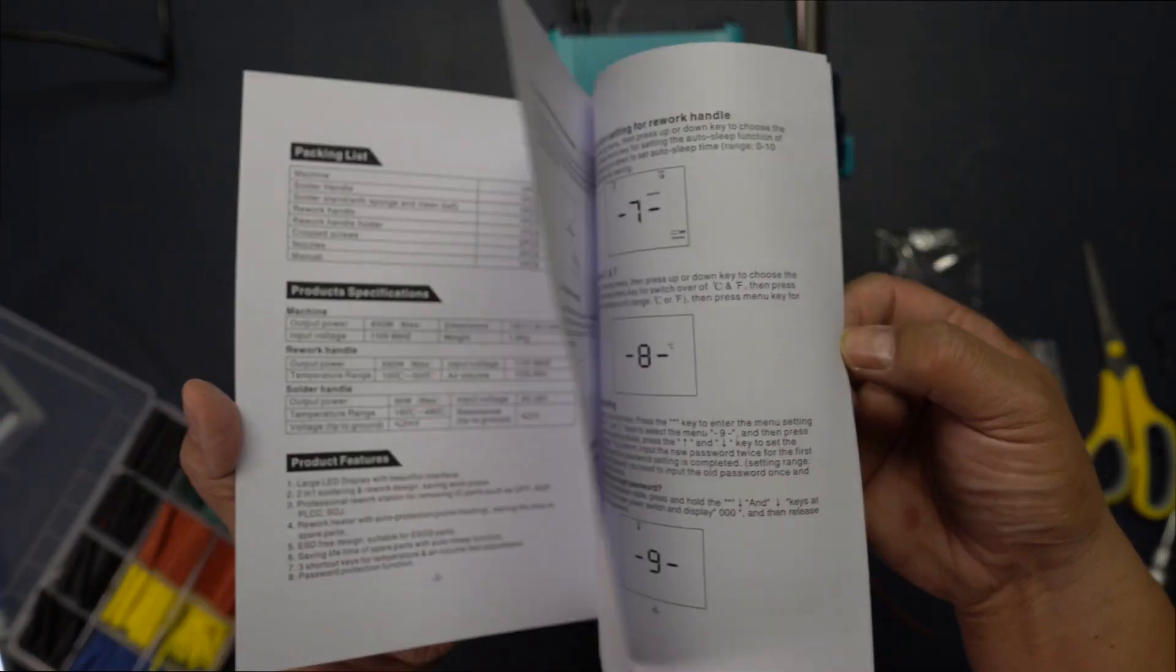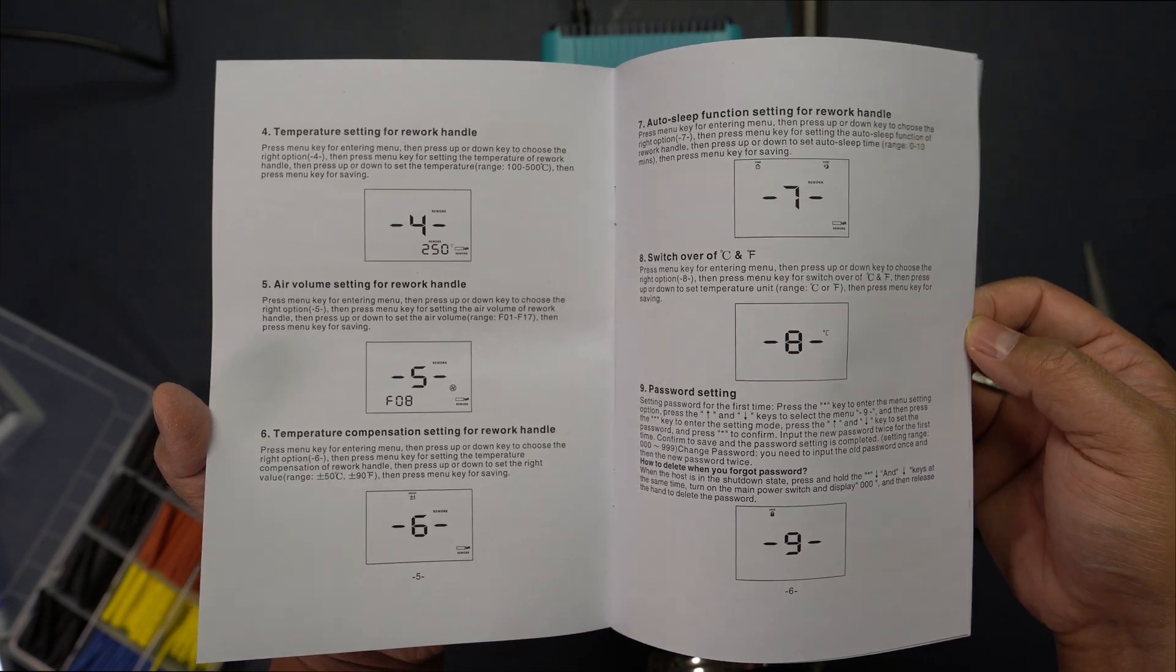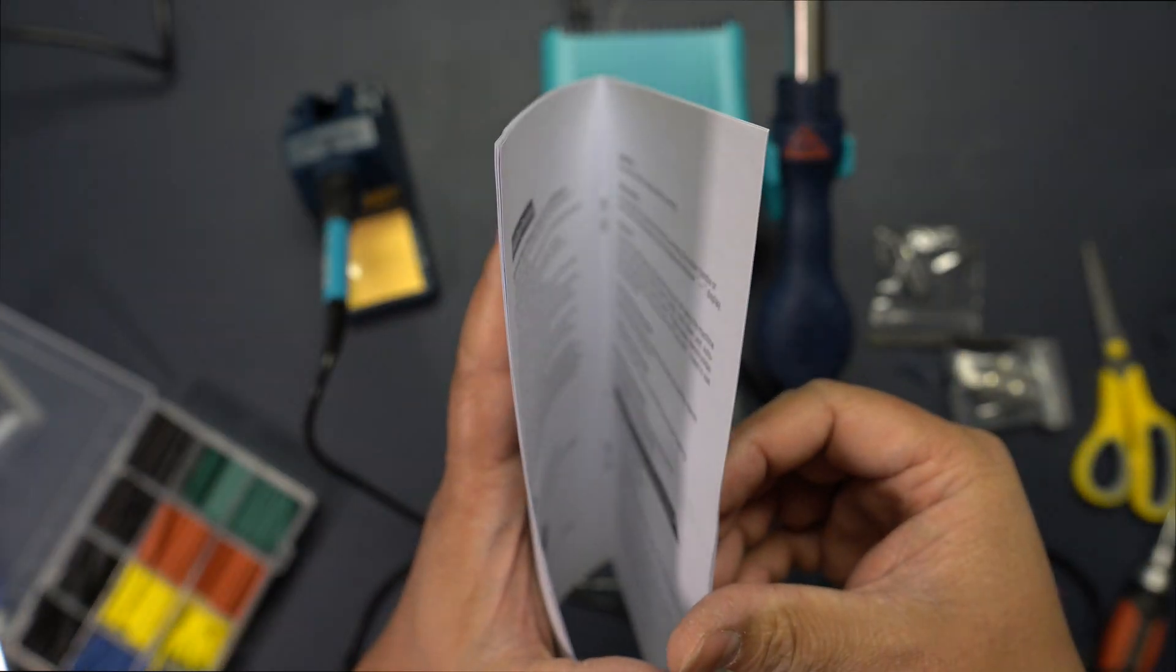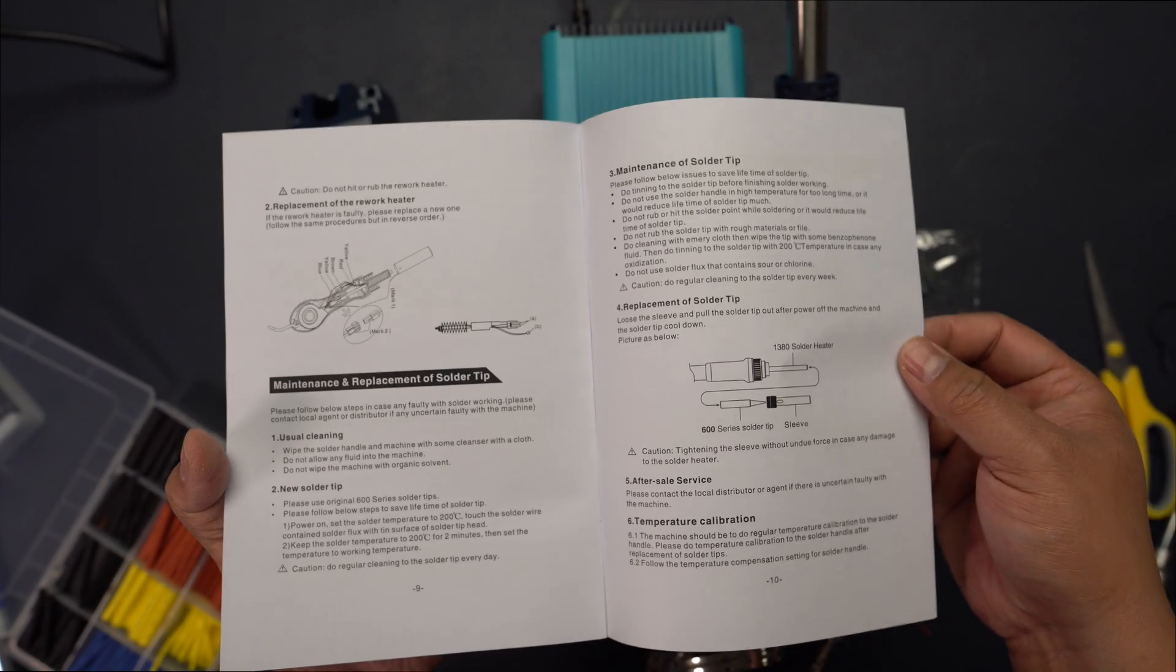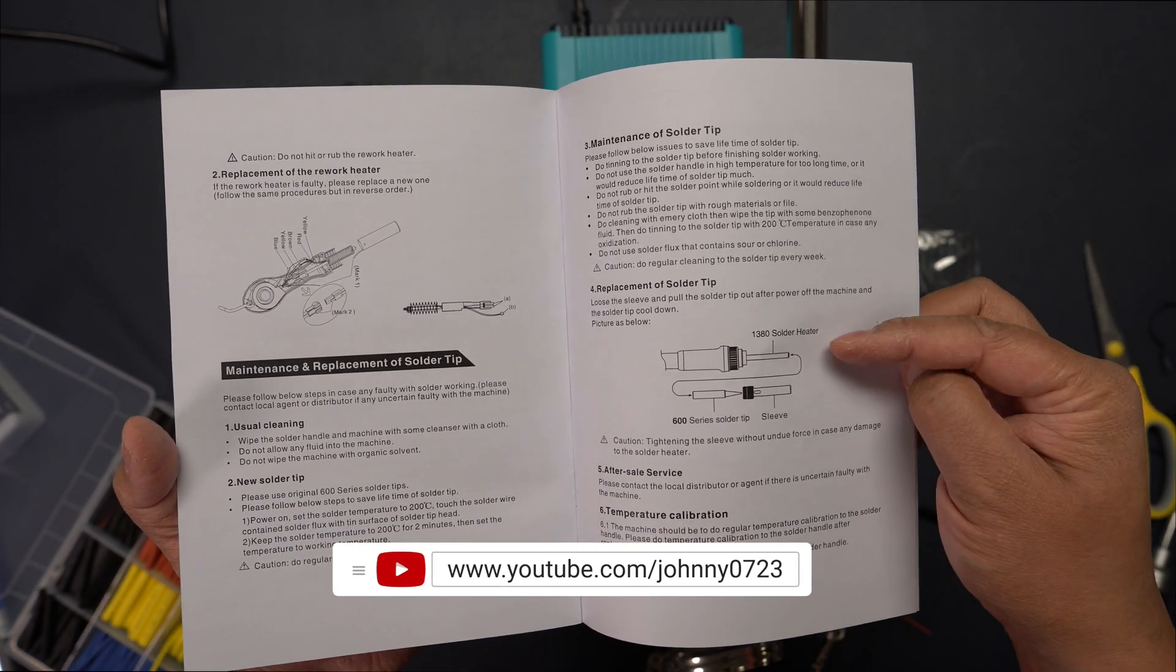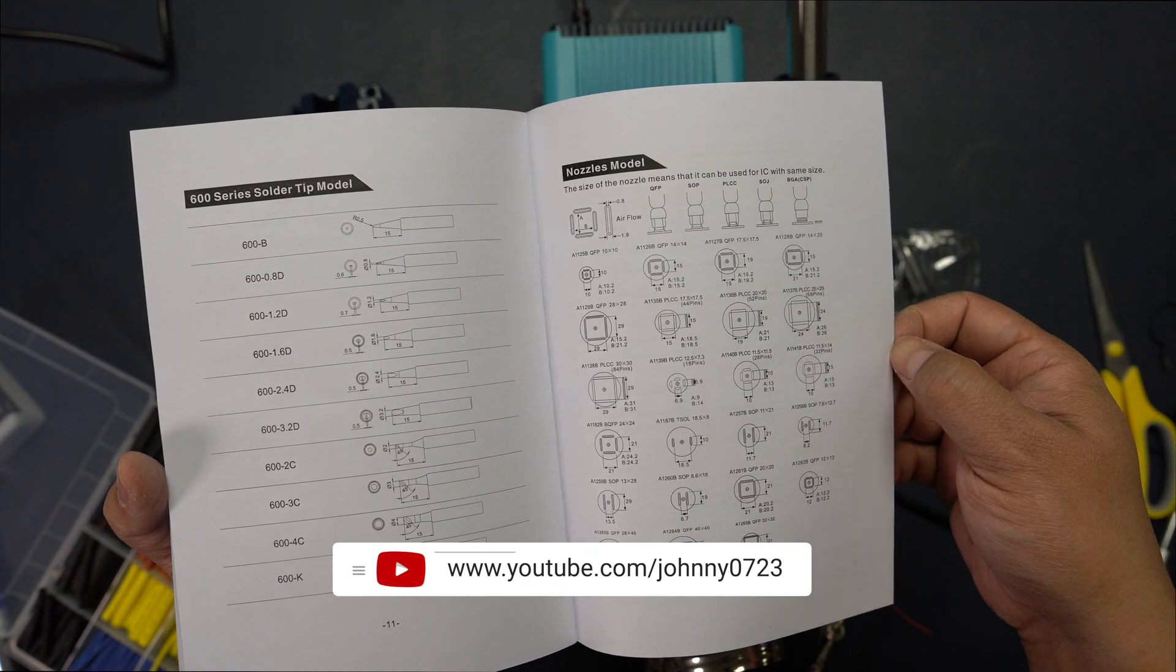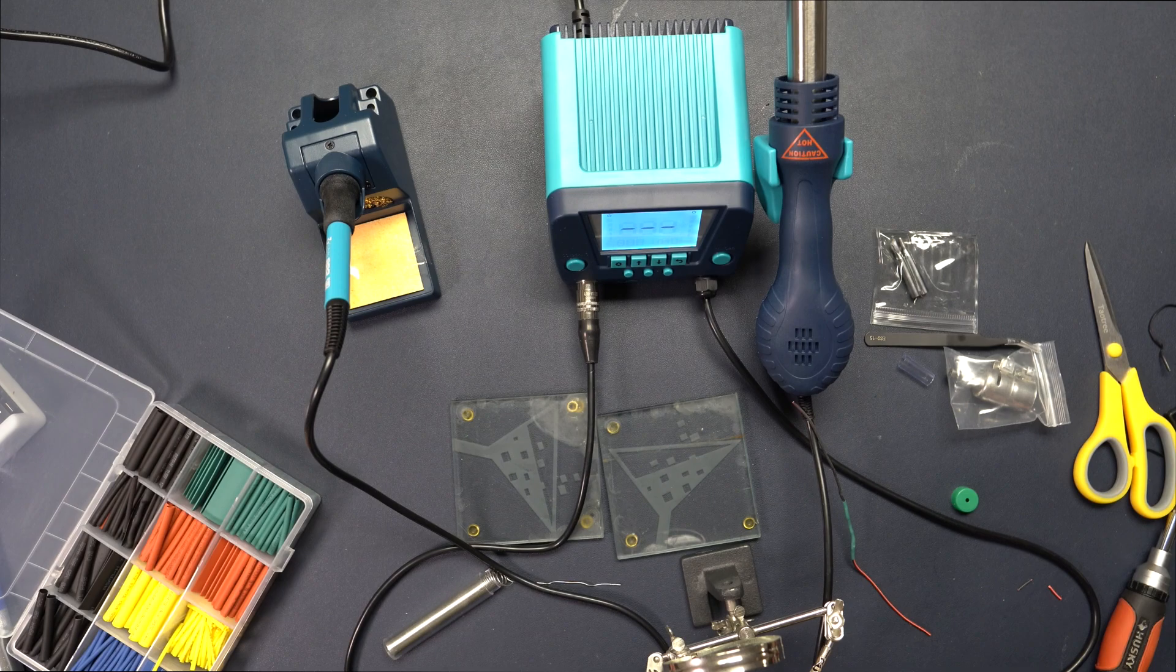Here's the next set of menu settings, some maintenance tips. Replacing the solder tip - how to do that is right here. Alright guys, thanks for watching. Hopefully you found it helpful and I'll see you next time. Bye-bye.